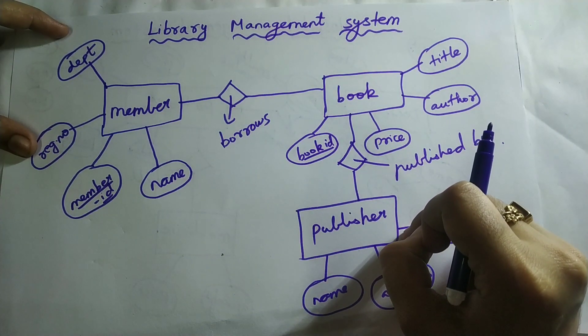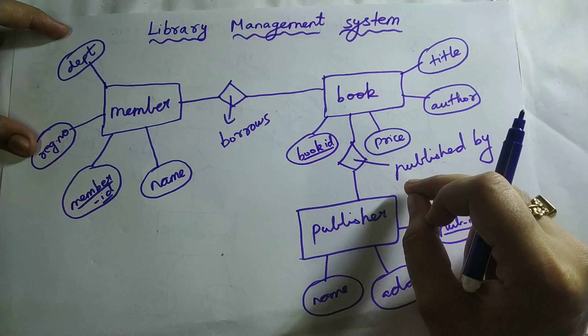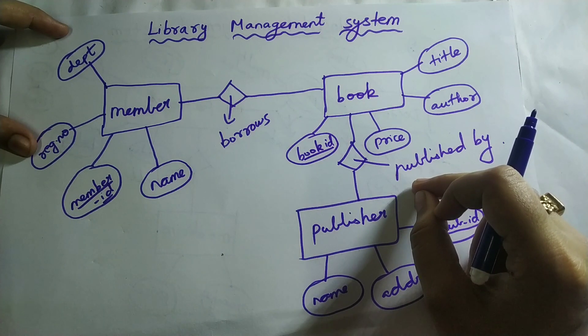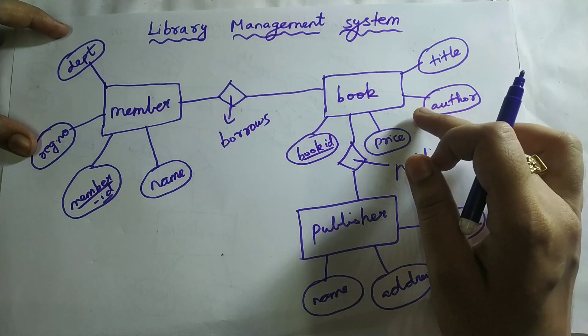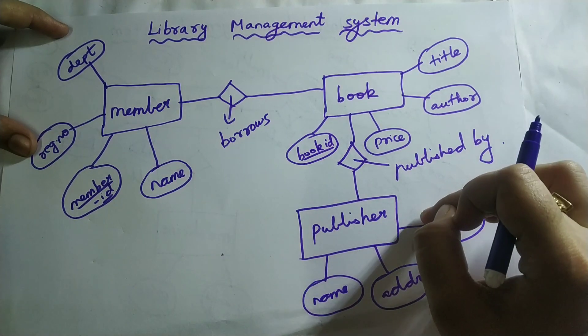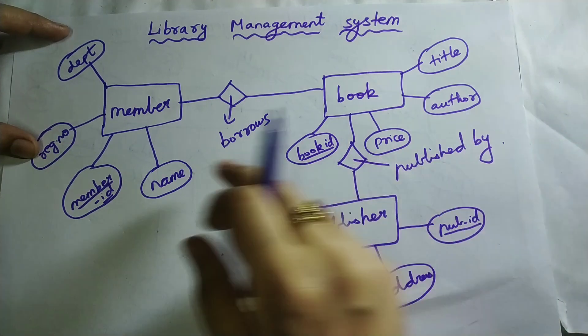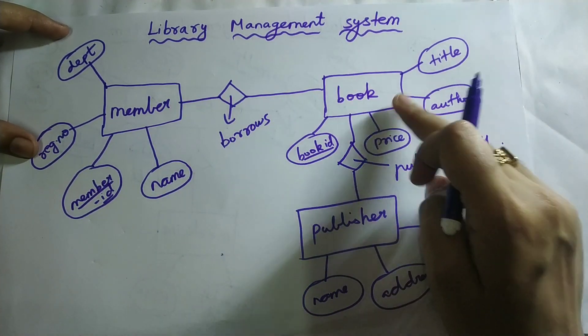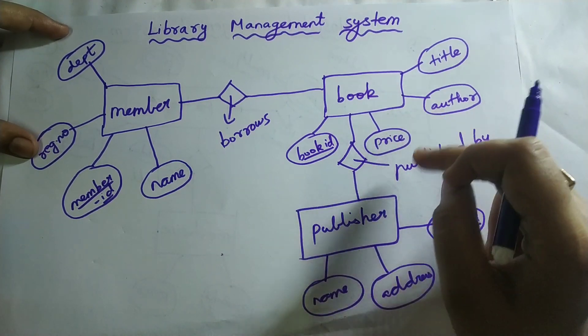For example, you take some book that is needed by 10 people. Then 10 copies should be there. Only then I can provide it to 10 members. So publisher should make 10 copies of that book. The member will go to the library and borrow some book. That book will be published only by the publisher.